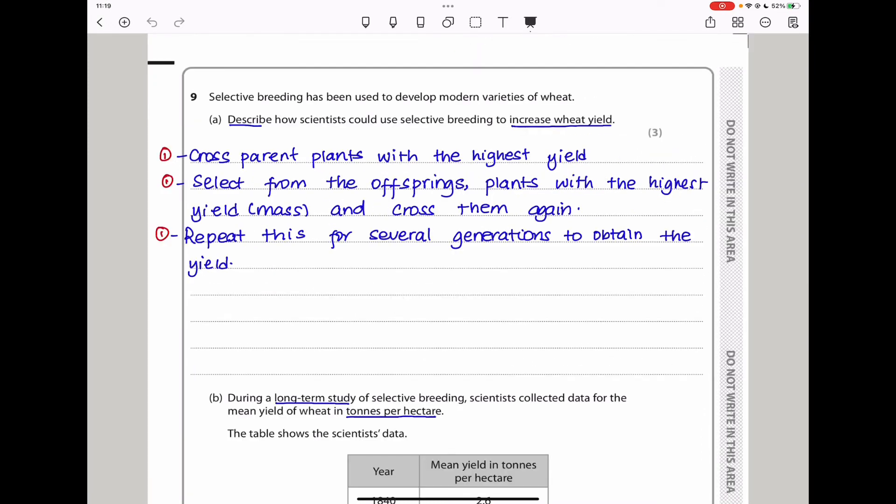This brings us to the end of question eight. Let us continue to question nine. Selective breeding has been used to develop modern varieties of wheat. Describe how scientists could use selective breeding to increase wheat yield. In selective breeding, you will get parent plants that have the highest yield and cross them together. Obtain offspring and choose offspring with the highest yield and cross them together in a second generation. Then repeat these crosses over long periods of time. Every time, choosing offspring with the highest yield and cross them until you obtain the desired yield. Cross parents with the highest yield and then select from the offspring plants with the highest yield and cross them again. And then repeat this for several generations to obtain your desired yield.